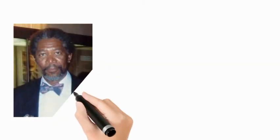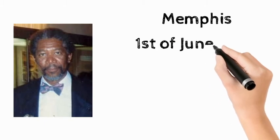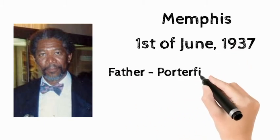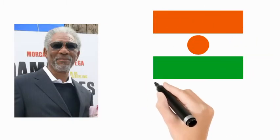Morgan Freeman was born in Memphis on June 1st, 1937, and he is the son of Potterfield Freeman and Mamie Edna. According to his DNA analysis, some of his ancestors are from Niger in Africa.